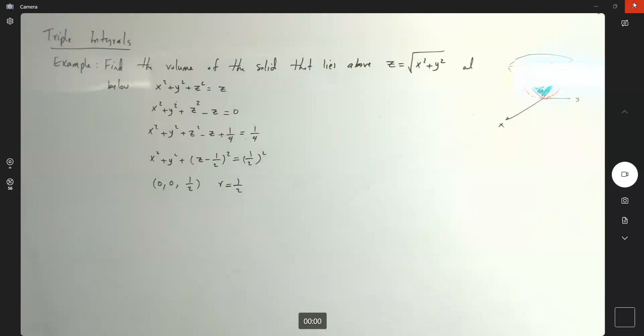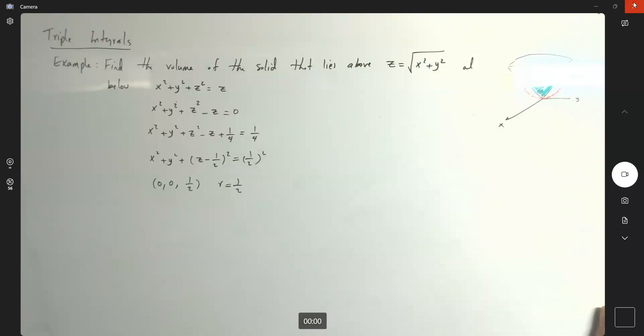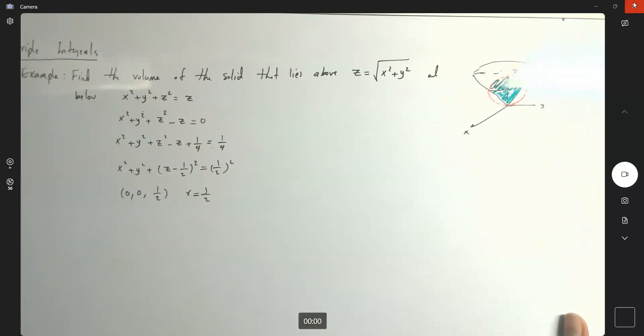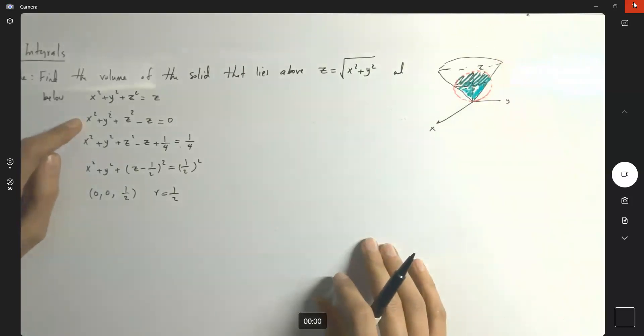So what is this? How to identify my type? Is it a cylindrical coordinate system? Is it a spherical coordinate system? What should I do? Since I have a sphere here, I'm going to convert everything into a spherical coordinate system.